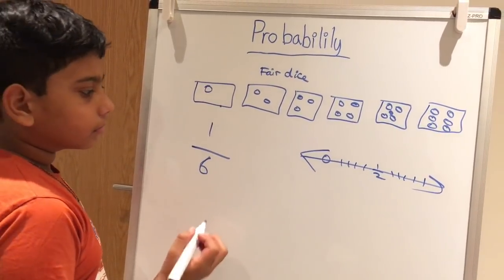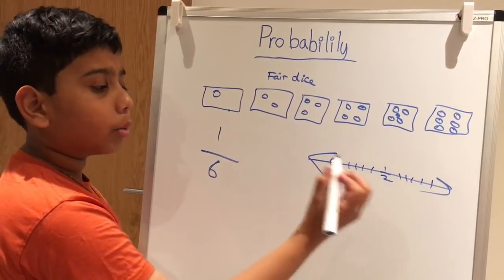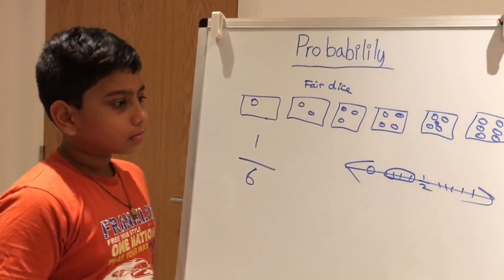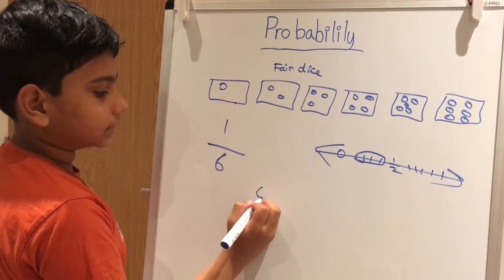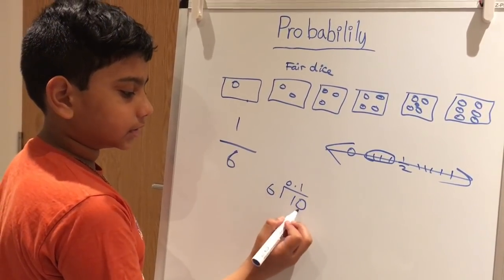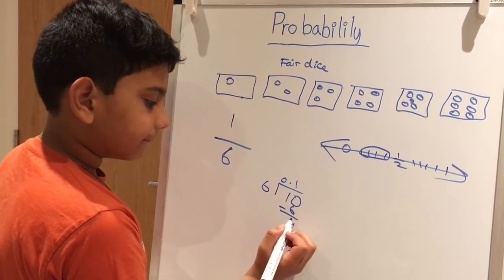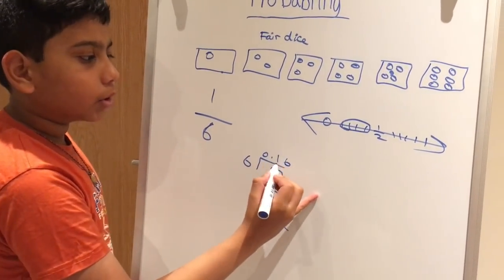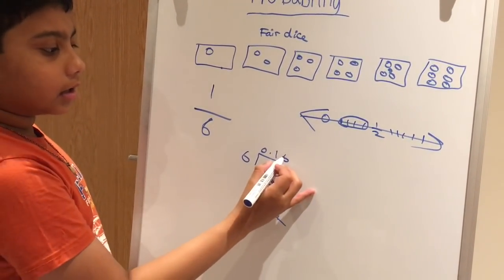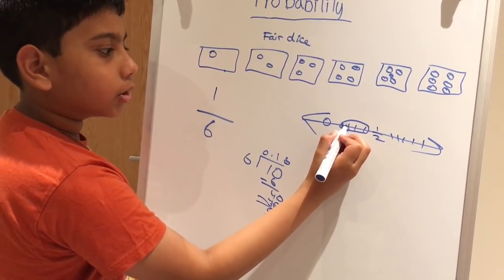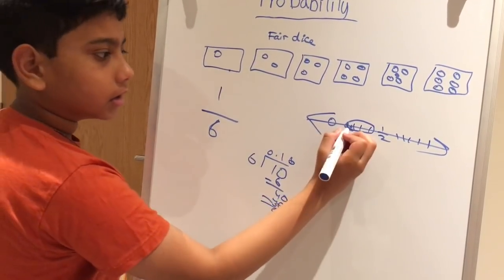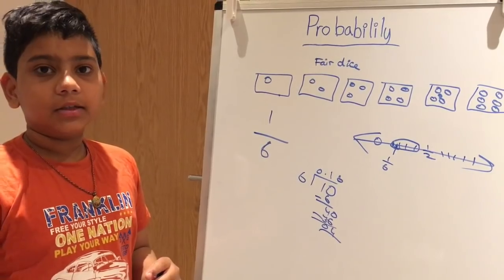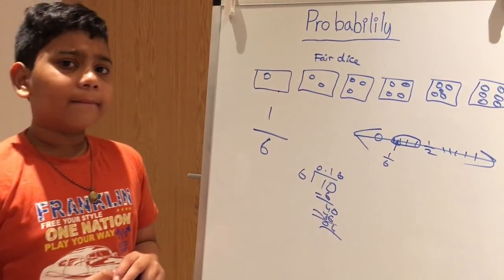Let's place one over six on the probability line. One over six is between zero and one over two, so it falls in the unlikely zone. To find exactly where, we divide to get approximately 0.166. It starts with a one, so it's in the first section, and the six means it's near the right of the first line, close to the second line. So that's the probability of rolling any one side on a dice.